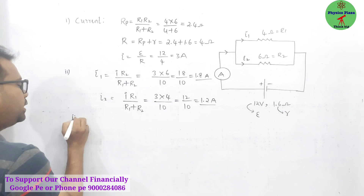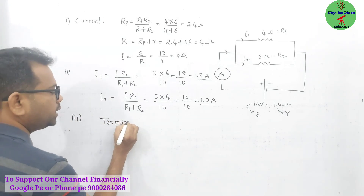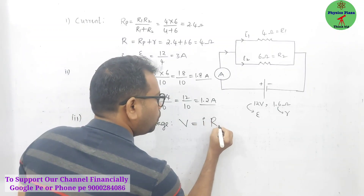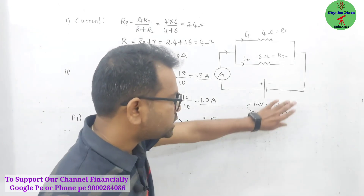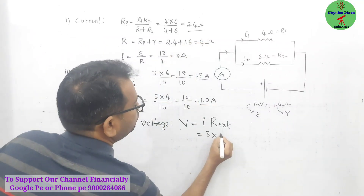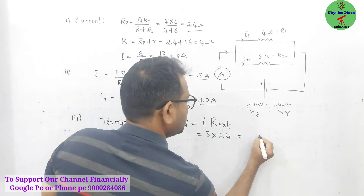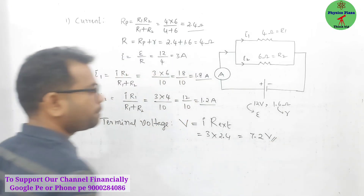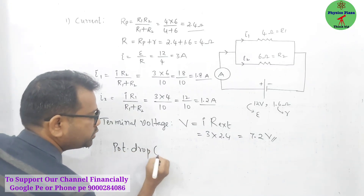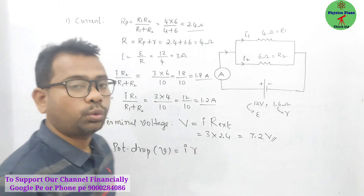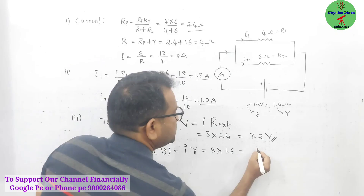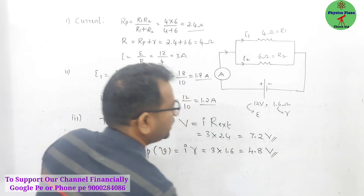Now for terminal voltage — very important. Terminal voltage V = I × external resistance only; you should not consider internal resistance. External resistance is 2.4 ohm, so V = 3 × 2.4 = 7.2 volts. For potential drop: total current × internal resistance only = 3 × 1.6 = 4.8 volts.